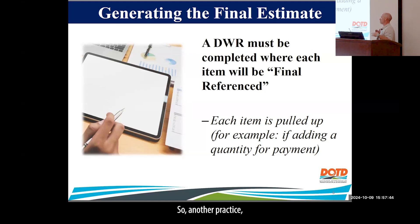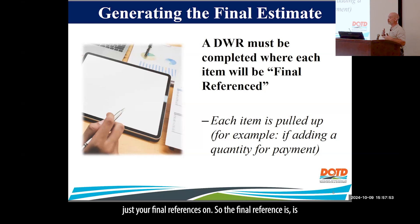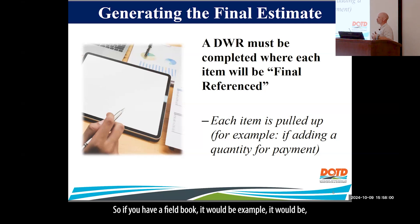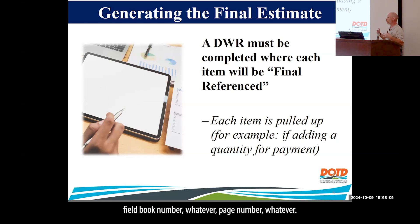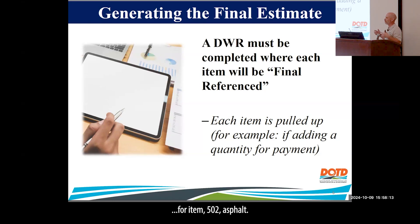Another practice: a final DWR should be done once you're ready to submit your project, with just your final references on it. A final reference is where your totals are for the items that you're paying. For example, if you have a field book, it would be field book number whatever, page number whatever — that's the total for item 502 asphalt.